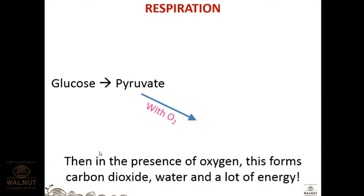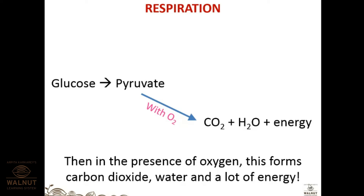In the presence of oxygen, the breakdown of pyruvate is called aerobic respiration. The end products of aerobic respiration are carbon dioxide, water, and energy. So remember: glucose is broken down into pyruvate, and pyruvate broken down in the presence of oxygen gives CO2, water, and energy.